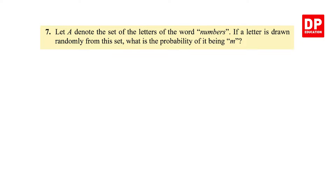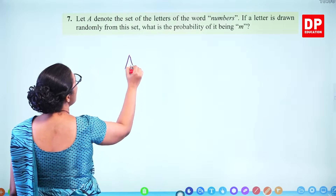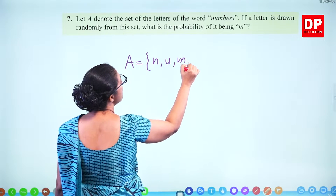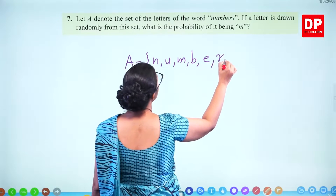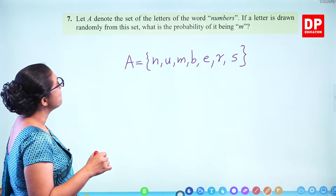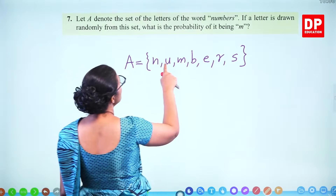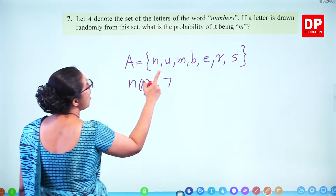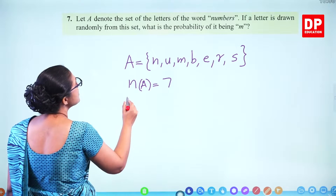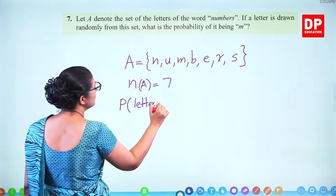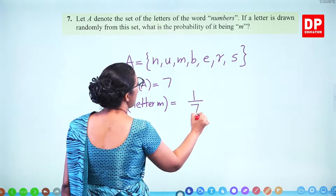Let A denote the set of letters of the word NUMBERS. If a letter is drawn at random from this set, what is the probability of being M? The letters are N, U, M, B, E, R, S — all different letters. There are 7 letters altogether. You are selecting M, and there is 1 M. So the probability of getting the letter M is 1 out of 7.